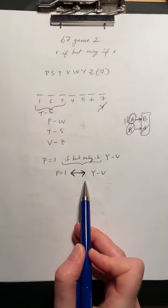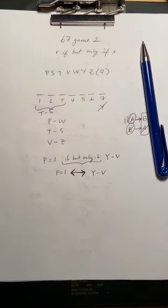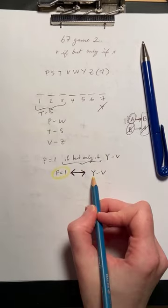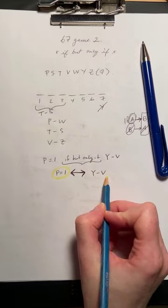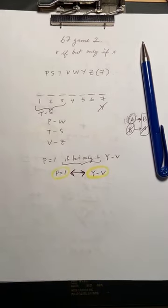But when we have a double-headed arrow, both of these are triggers. So knowing that P is first, that's enough information to know that Y is before V, and also knowing that Y is before V is enough information to know that P is first.